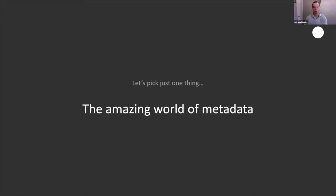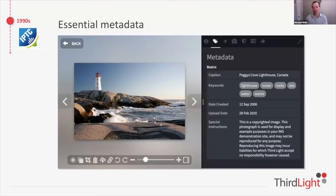Metadata is a really fundamental piece of technology and opportunity that comes through a DAM. Let's go back to the 1990s when the Press and Telecoms Commission was working with newspapers. People like Reuters were moving images around newspapers and they defined for the first time the idea of embedded metadata — so a file like a JPEG could have content in text form embedded in it, giving us things like captions, keywords, and copyright.